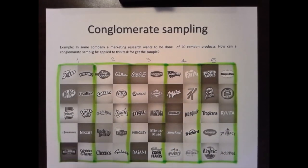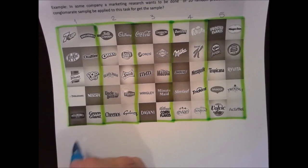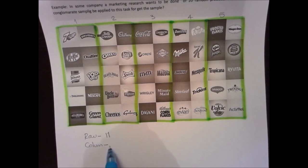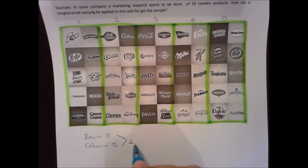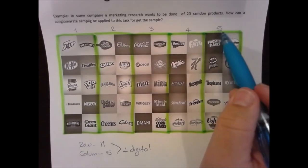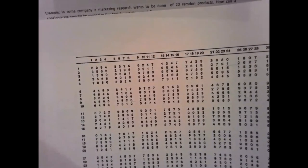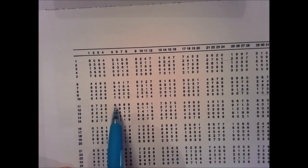Since I want 20 products, I will choose 2 groups. Again, I use the random number table — row 11, column 5 — and work with one digit since the last group number is 5. Going to row 11, column 5: we get 9 — no group 9. Then 8, 6, 9, 9 — no. Then 3 — yes, group 3 is the first selected group, giving us 10 products.